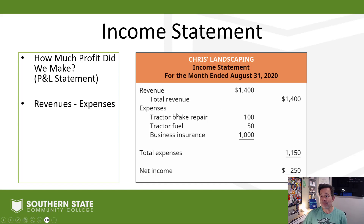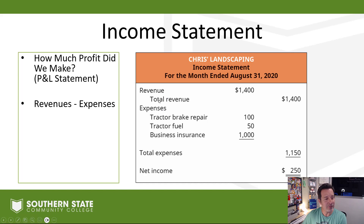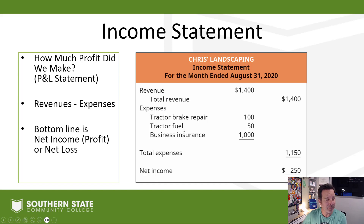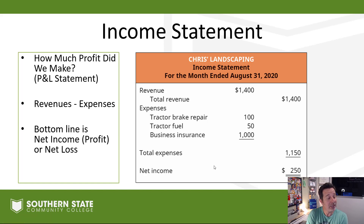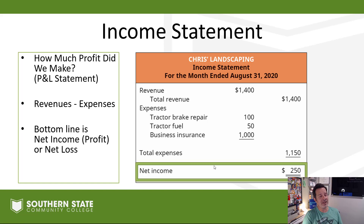Revenue minus expenses is our format. On your income statement, the revenues are always going to be at the beginning, then your expenses, and revenues minus expenses gives you net income. That bottom line is profit. It won't always be positive - sometimes if we've lost money, we'll have a net loss. That's our income statement - $250. We made money. Great job at the landscaping company.